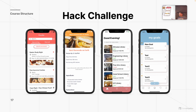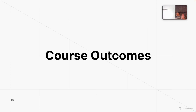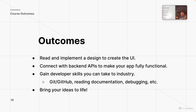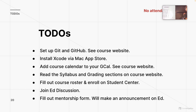By the end of the course you can expect to create a fully working app like those examples. In terms of course outcomes and goals, you'll be able to design and create UI, as well as integrate with a back-end. In addition to iOS development skills, we'll sprinkle in general developer skills like GitHub, reading documentation, and debugging — all valuable for any CS class you take later. Most importantly, you'll be able to bring your ideas to life as a fully working app.